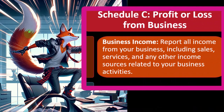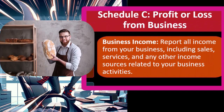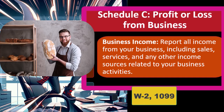Schedule C reports profit or loss from the business. You report all income from your business including sales, services, and any other income sources. When talking about a business, it's more complex to determine what income exists. With W-2 or 1099 income, the IRS has become very good at forcing the payer to report income earned. For an employee, the IRS already has the W-2 and 1099s in certain contractor cases.